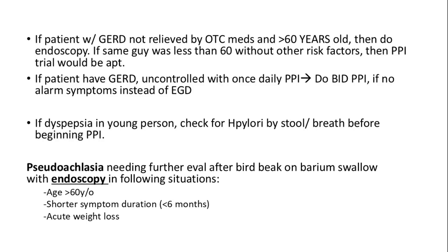However, if the patient is under 60 without alarm features, a trial of PPI is reasonable. For patients with GERD that's uncontrolled on once-daily PPI, increase to twice-daily dosing if there are no alarm symptoms — in that case, an EGD may not be necessary. For young patients with dyspepsia, test for H. pylori via stool antigen or breath test before starting PPI therapy.